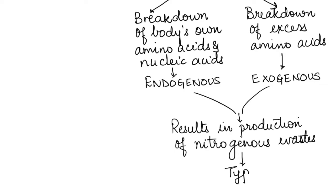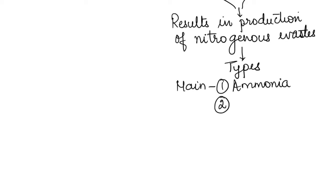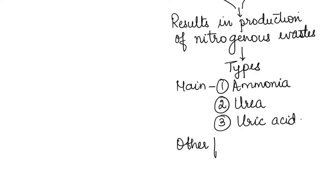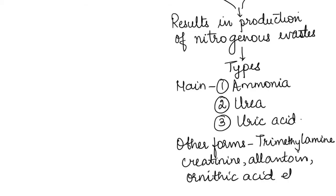These nitrogenous wastes can be of different types in different organisms. They are mainly of three types: ammonia, urea, and uric acid. Other than this, they can also be in the form of amino acids, trimethylamine, creatinine, allantoin, and also sometimes in the form of ornithuric acid and guanine.